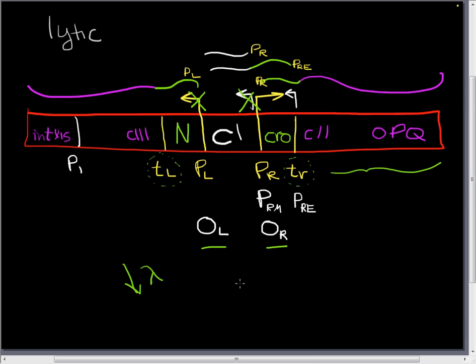So the choice between the lytic cycle and the lysogenic cycle is really going to be ruled by how much lambda we have around versus how much crow we have around. And all of this is going to be dependent on the amount of C2. If we have a lot of C2 around, we're going to upregulate lambda. And if we don't have a lot of C2 around, then the crow that is normally made is not going to be inhibited.